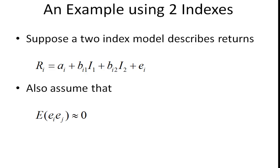Now, the best way to get a basic understanding of this is to look at a two-index model. Here we have the returns for security i are generated by an intercept term, a sensitivity of stock i's returns to the first market index, a sensitivity of stock i's returns to the second index, etc. And of course, if we wanted to have more indexes we could.